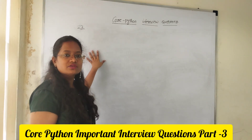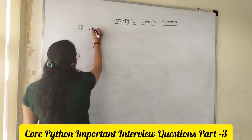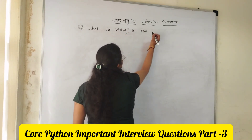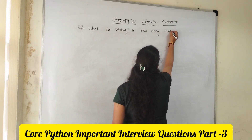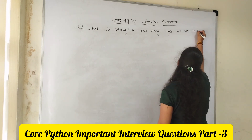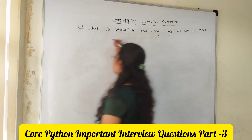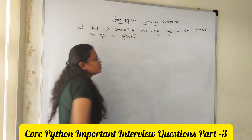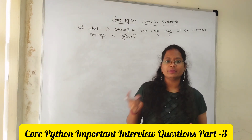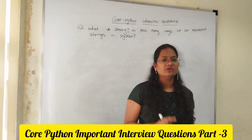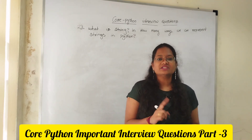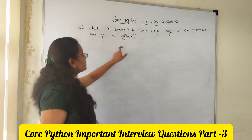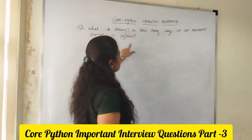Coming to strings, the questions they will ask in the strings concept: what is a string, and in how many ways can we represent strings in Python? Everybody knows strings can be represented with single quotes or double quotes, but actually strings are represented with single quotes, double quotes, single triple quotes, and double triple quotes. Single triple quotes are used for comments and double triple quotes are used for docstrings. That is the reason you need to explain all four types.